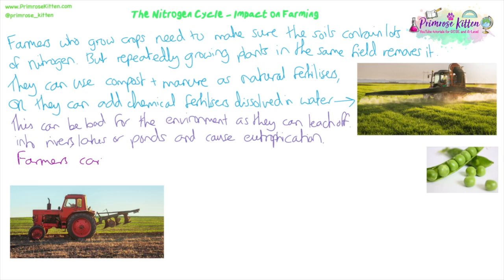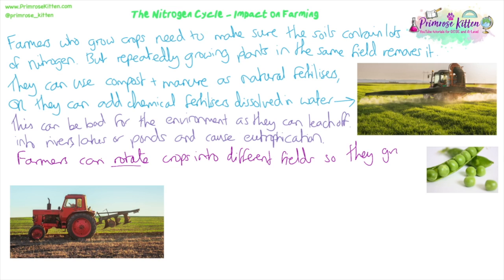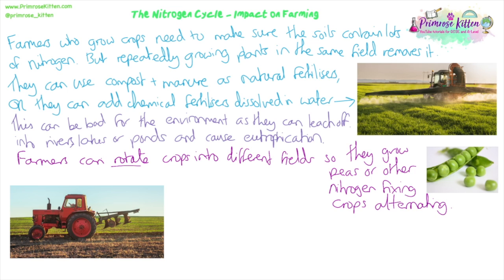An option that doesn't involve adding any fertiliser is to rotate your crops. If you're growing your main crop in one field, instead of leaving the other field empty, grow a crop like peas, beans, or clover — plants with nitrogen-fixing bacteria in their roots — in that field, which will put nitrogen back into it. Then when your crops are done, you swap. Every time you harvest a crop and remove it, you plant a legume to get the nitrogen back into the soil. This is called crop rotation, and it's been done for hundreds of years.